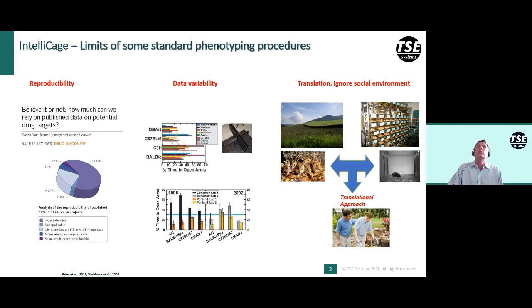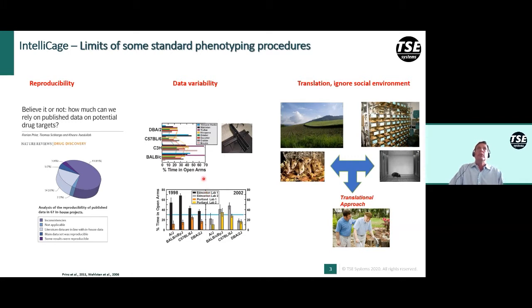Since Crabbe and Wahlsten published data on four different strains of mice tested by a variety of different researchers on the elevated plus maze, we know that the source of data variability in behavioral experiments is mostly the human experimenter. This kind of data variability is also responsible for problems in reproducing previously published data.